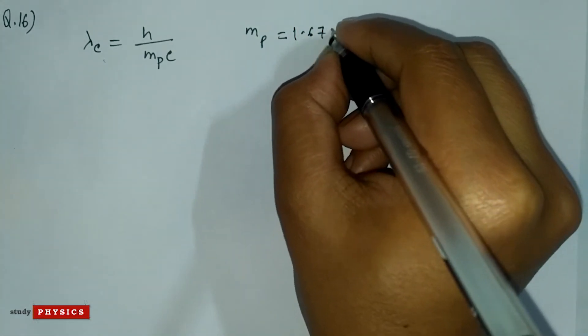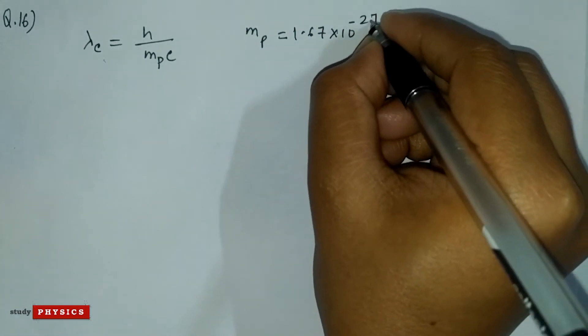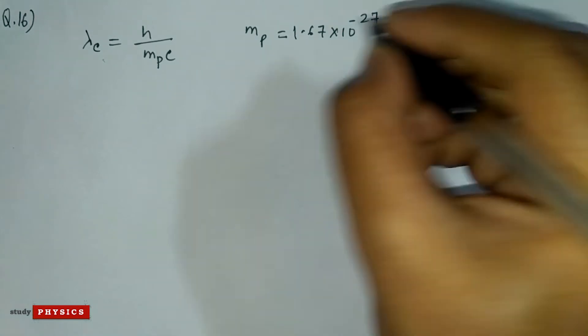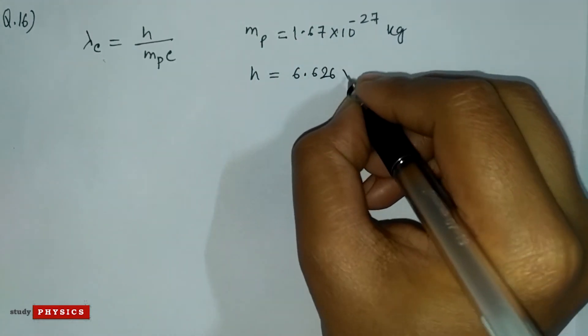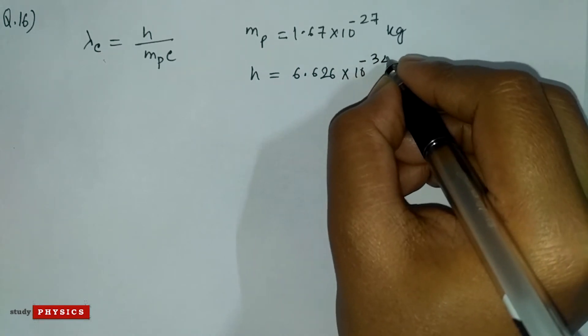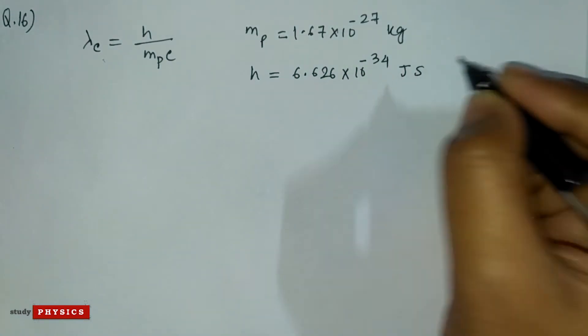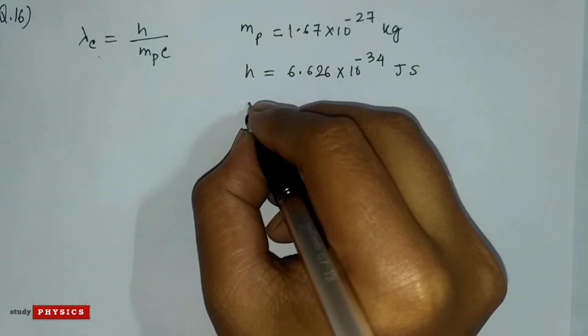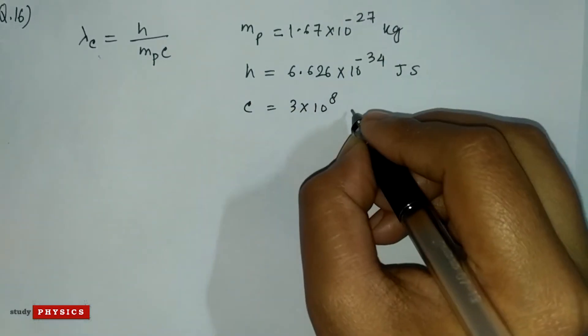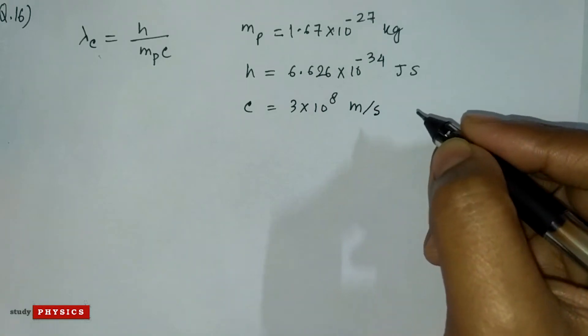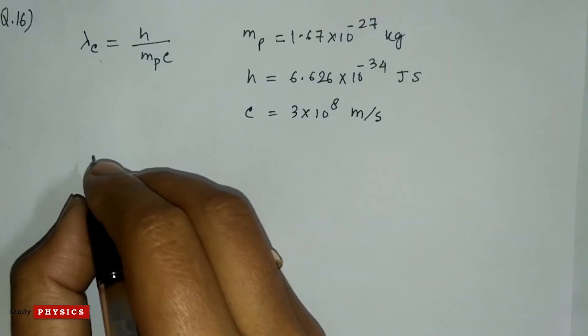So mp is 1.67 into 10 to the power minus 27 kg. h is 6.626 into 10 to the power minus 34 joule second. Then c is 3 into 10 to the power 8 meter per second.